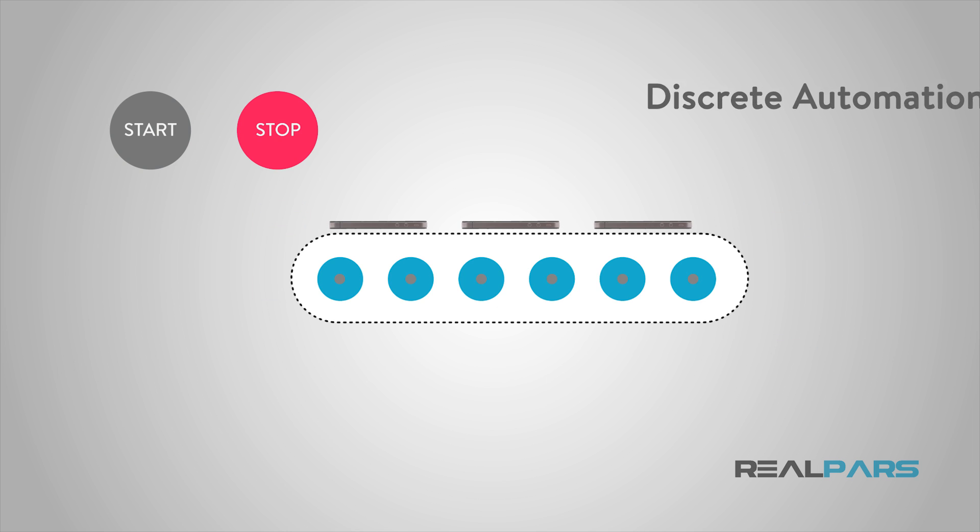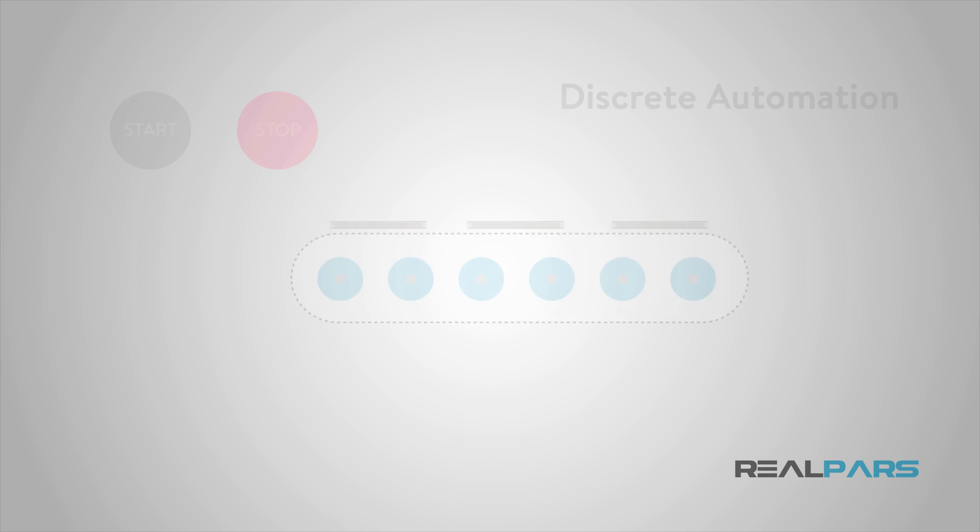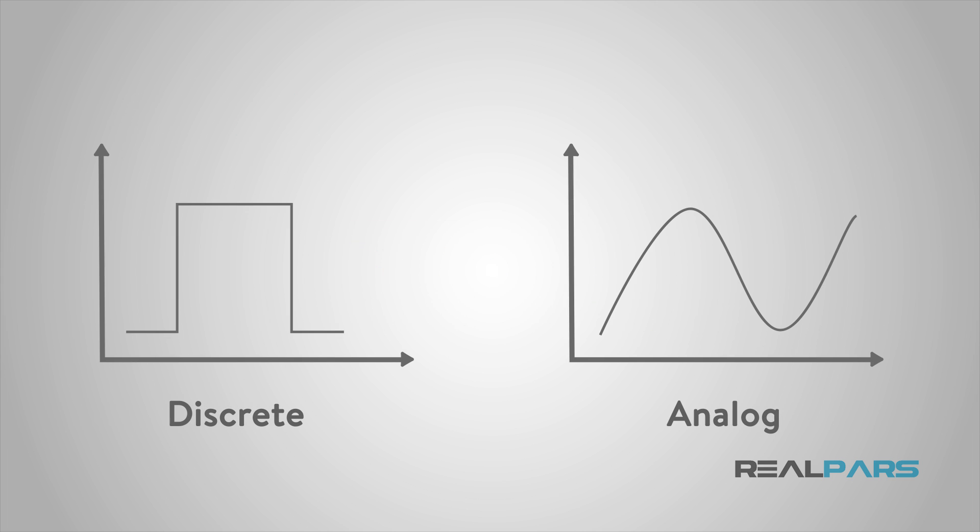Basically, discrete automation production of components may be started and stopped no times or multiple times. The starting and stopping of an automation process can be done in either discrete or analog automation. However, starting and stopping a discrete process is as easy as stopping a machine after the last component is produced, and then starting it up again when you want to resume production. This is one of the easiest forms of process automation.